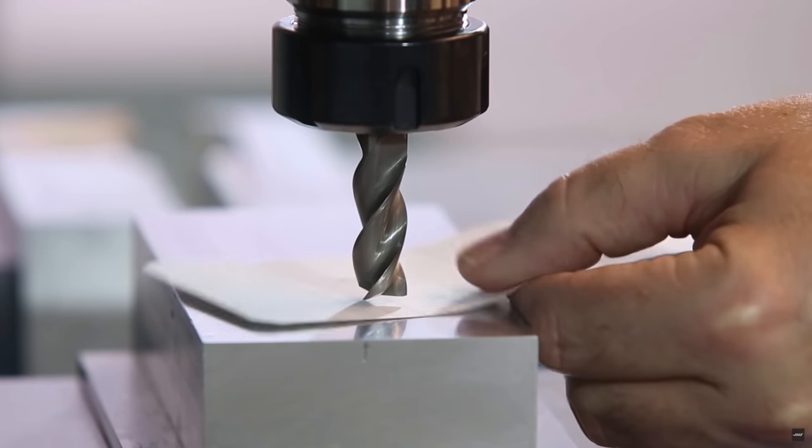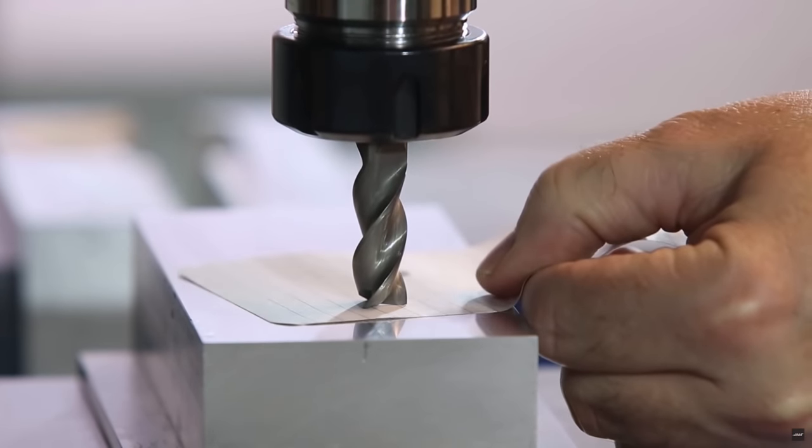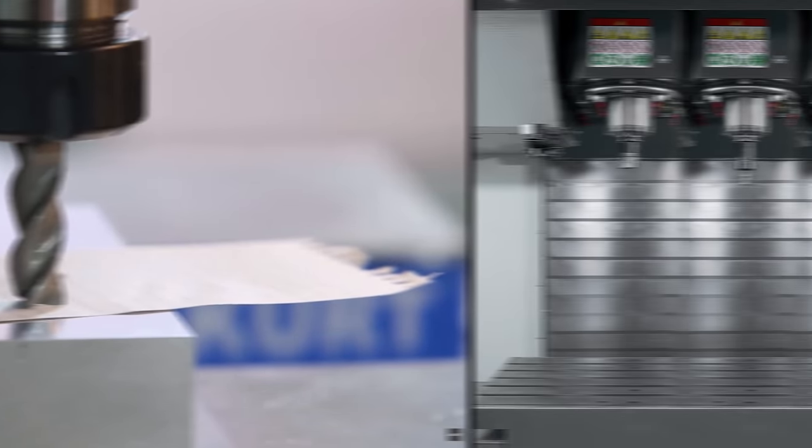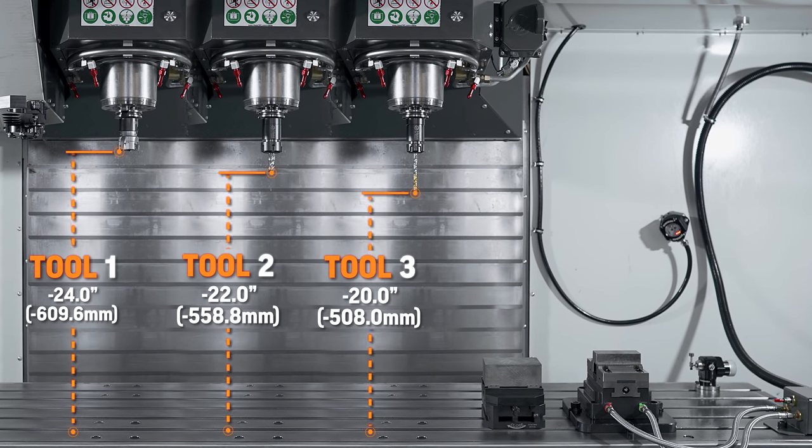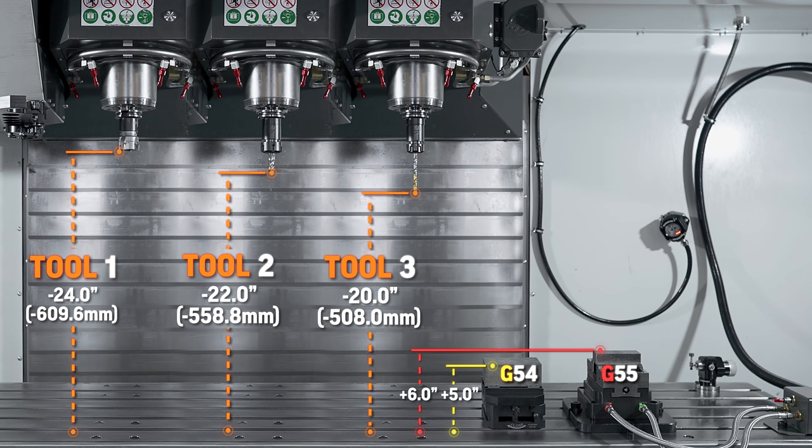Rather than touching off our tools right on top of our workpiece like we show you in other videos, we are going to use a different method: setting all of our tools off of our machine table and then entering the distance from our table to the top of our workpiece as our work offset Z values.